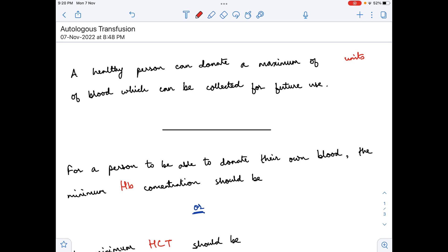We will understand this by asking a few questions and then answering them. So, how many units of blood can be collected for future use? The answer to that is, a person can donate a maximum of 5 units of blood which can be collected for future use.